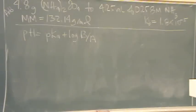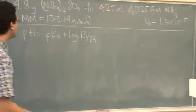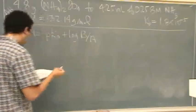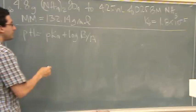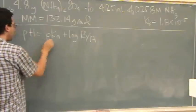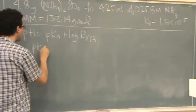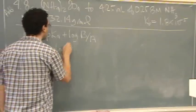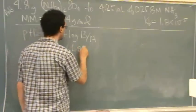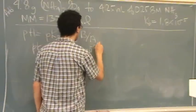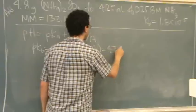So let's start with Kb. You can do this several ways. But we want to find pKa. We have Kb. So if we go pKb first, that's the negative log of Kb, which is 1.8 times 10 to the minus 5. I think that's 4.74.